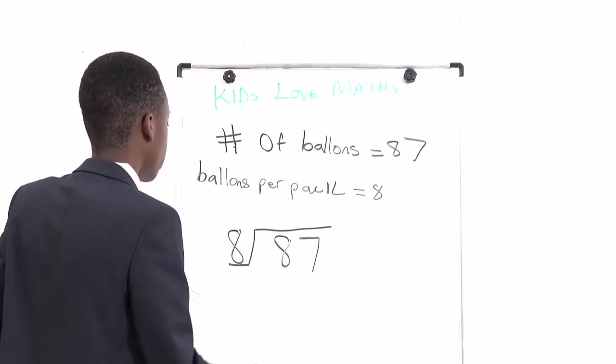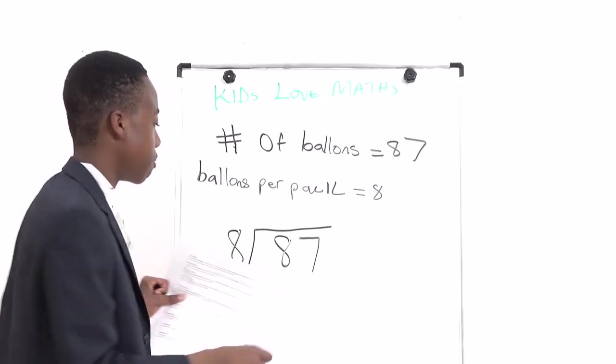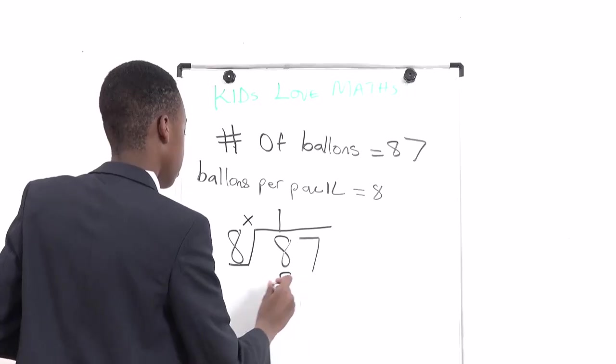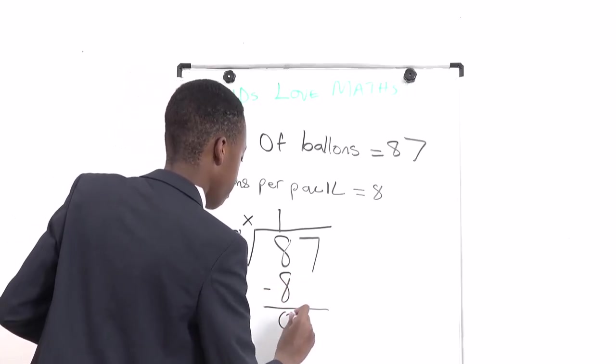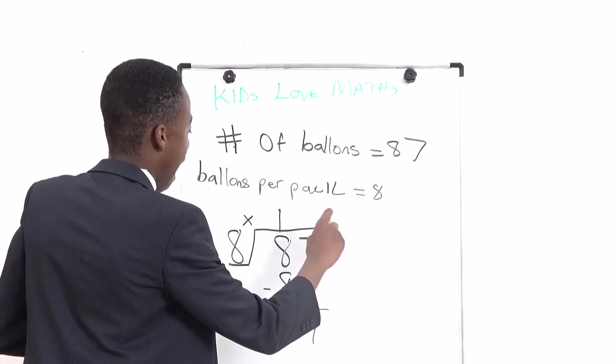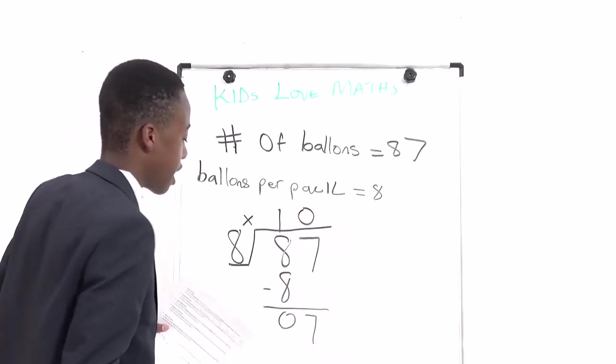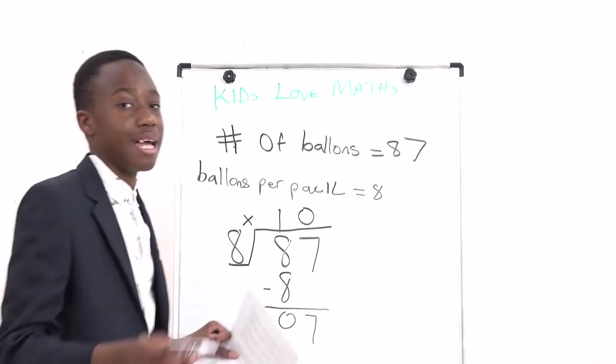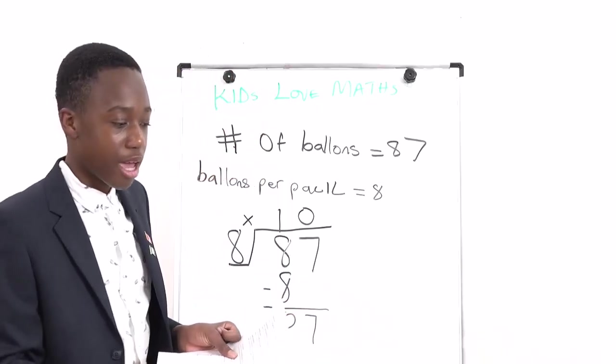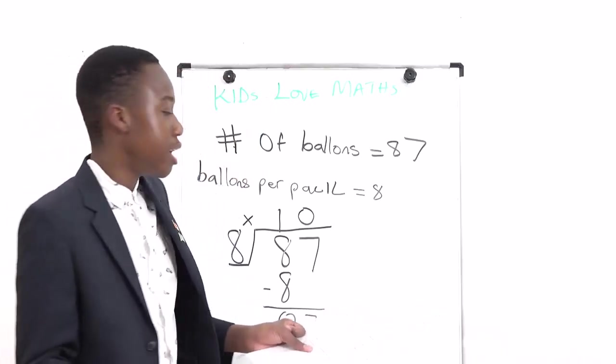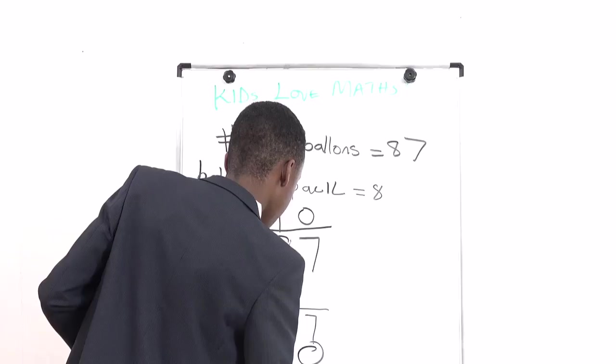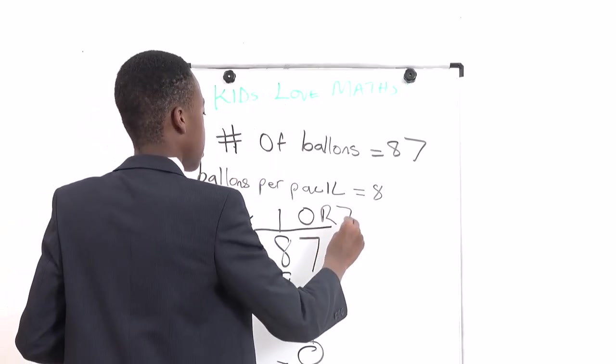Long division is just a different type of division that works with bigger numbers. So we put 87 here and 8 over here. 8 divided by 8 is 1. 1 times 8 equals 8. We minus that and we have zero. And we have 7. Since 7 can't fit into 8 and we don't have any other digit after 7, we have to put a zero.